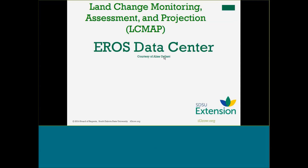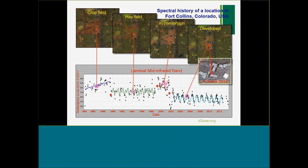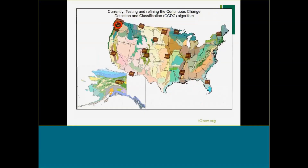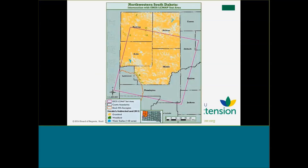We've also worked with Eros Data Center on a project called LCMAP, which uses satellite data and maps the history of pixels — showing distinct patterns that correlate with land use history: cropping, hayfield, conversion, and development. It's a really neat project, except that it only goes back to the mid-1980s, which limits its applicability for what we're doing. We hope to be able to help them ground-truth their data based on our work in western South Dakota, which aligns well with one of their truthing stations.